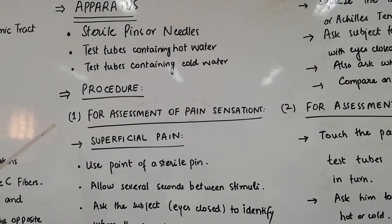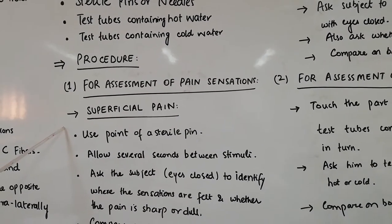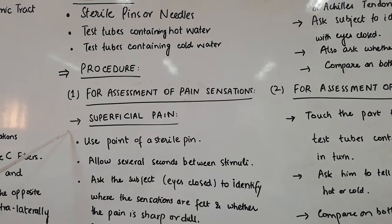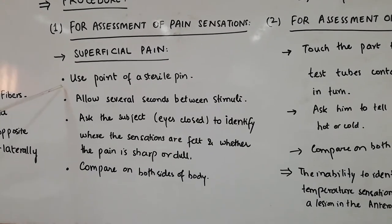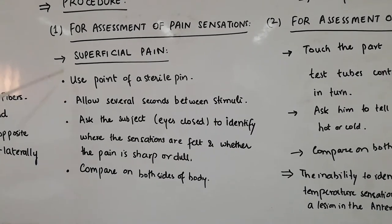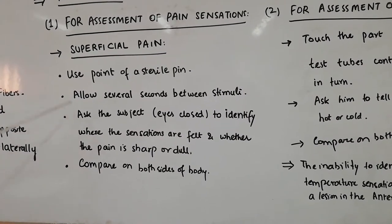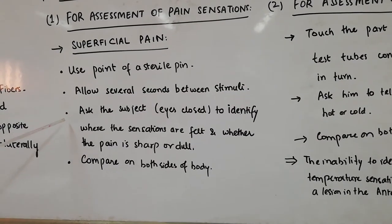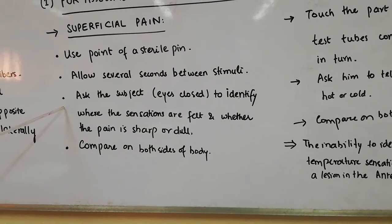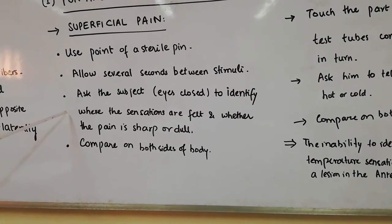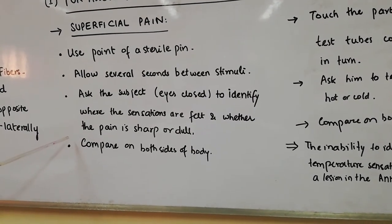For assessment of pain sensations, both superficial pain and deep pain are assessed. To check superficial pain, use the point of a sterile pin or needle and gently touch any body part of the subject to be assessed. Allow several seconds between stimuli, then ask the subject to identify where the sensation is felt and whether the pain is sharp or dull. Make sure the subject's eyes are closed, and compare both sides of the body.